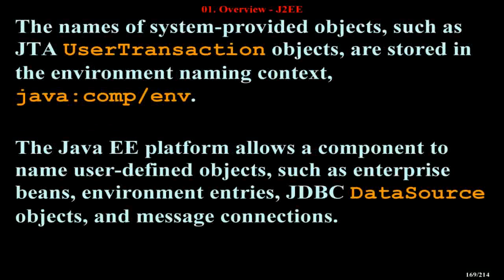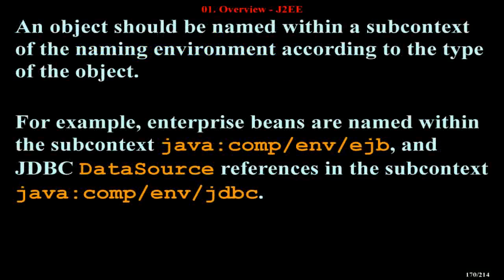The names of system-provided objects, such as JTA UserTransaction objects, are stored in the environment naming context java:comp/env. The Java EE platform allows the component to name user-defined objects, such as enterprise beans, environment entries, JDBC data source objects, and message connections. An object should be named within a subcontext of the naming environment according to the type of the object. For example, enterprise beans are named within the subcontext java:comp/env/ejb, and JDBC data source references in the subcontext java:comp/env/jdbc.